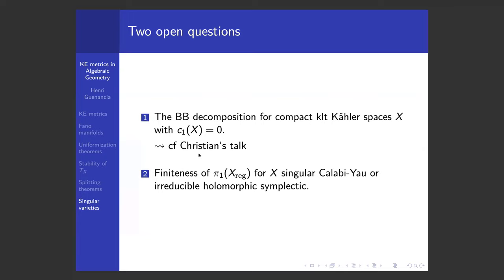For the finiteness of the fundamental group of Q-Fano varieties, it's really essential that the singularities are KLT. Even as Danielle explained, if you take a cone over a curve, you get worse singularities than KLT and you cannot expect finiteness in the ILC category or more general categories.